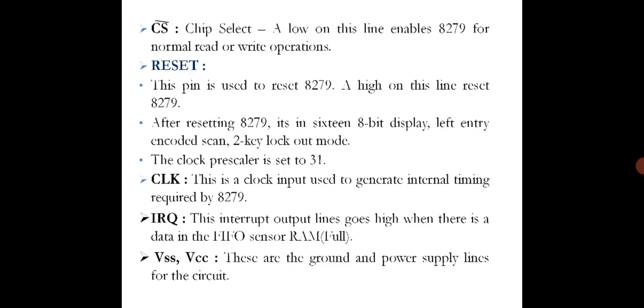Reset will reset 8279. After resetting, it will be in 16 8-bit display, left entry, encoded scan, 2-key lockout mode. Normally, the clock prescaler is set to 31. The clock input is used to generate the internal timing required by 8279.